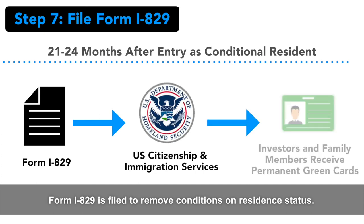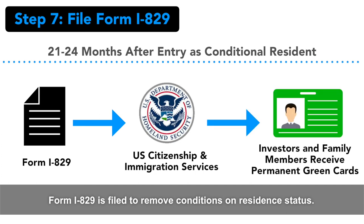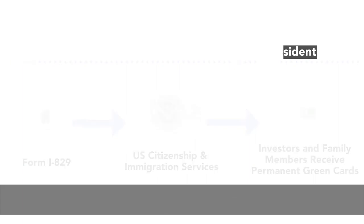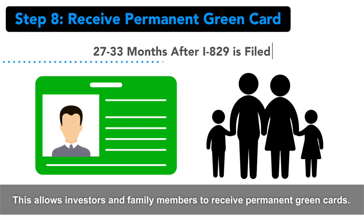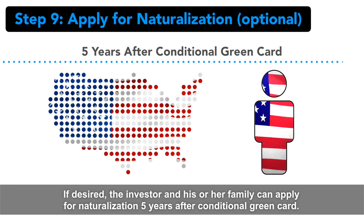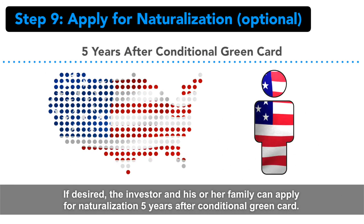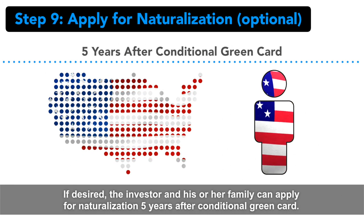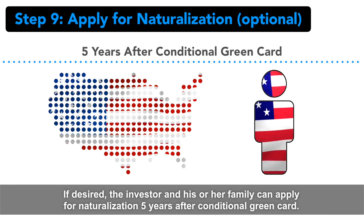Form I-829 is filed to remove conditions on residence status. This allows investors and family members to receive permanent green cards. If desired, the investor and his or her family can apply for naturalization five years after receiving the conditional green card.